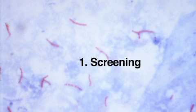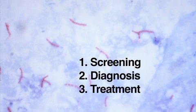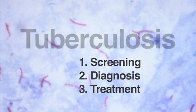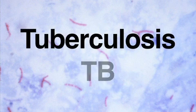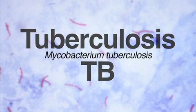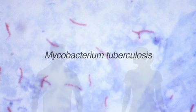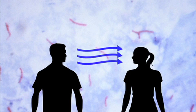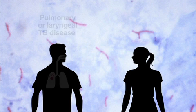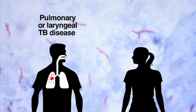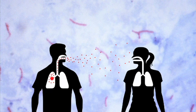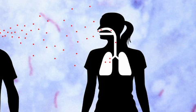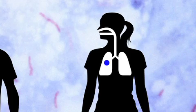Other videos discuss the diagnosis and treatment of TB infection. Tuberculosis, also called TB, is caused by mycobacterium tuberculosis and is spread from person to person through the air. People who have pulmonary or laryngeal TB disease can spread infectious particles into the air when they cough, sneeze, shout, or sing. Infection occurs when another person inhales these particles and they reach the alveoli of the lungs.